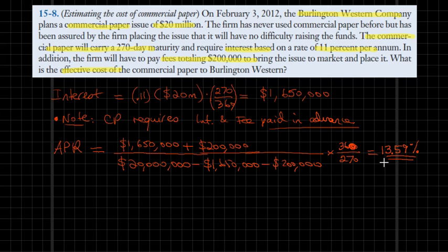One of the lessons learned here is that in the case of commercial paper, the interest expense and the fees are both prepaid, which affects — and actually increases — the cost of borrowing. That solves our problem. Looking forward to seeing you in our next video.